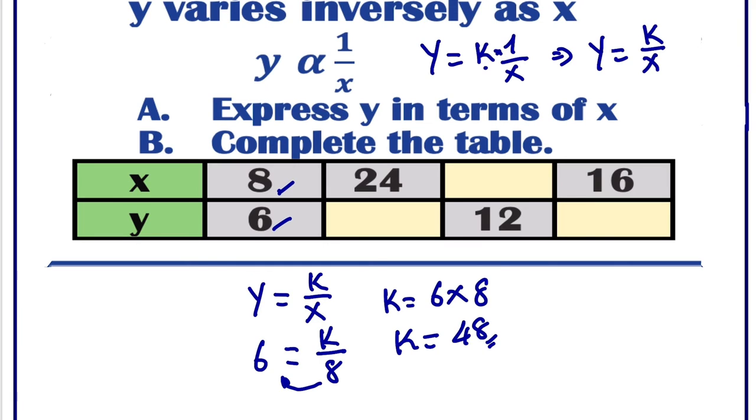Now that we have the value of k, to express y in terms of x, we just plug in the value here. So this will be y will be equals to k is 48, 48 over x. So we can see we have y in terms of x.